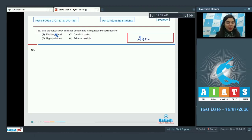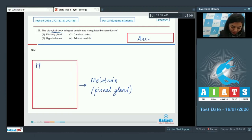Question 157. The biological clock in higher vertebrates is regulated by secretions of pituitary gland, cerebral cortex, hypothalamus, adrenal medulla. The biological clock or the sleep-wake cycle is regulated by melatonin and melatonin is secreted by pineal gland. But the secretion of melatonin is regulated by hypothalamus.